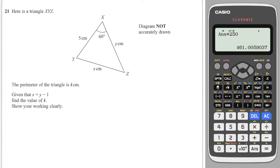Tricky question alert. We're asked to work out the perimeter of the triangle and it says that given that x is equal to y minus 1 find the value of k. Well if x is equal to y minus 1 then y is equal to x plus 1 and I could write that over here as x plus 1.